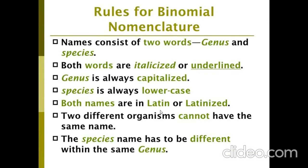We will now see some rules for writing a scientific name. It is the two-word naming system of genus and species. Both words are italicized or underlined. The genus is always capitalized. The species is written in lowercase. Both names are in Latin or latinized form.